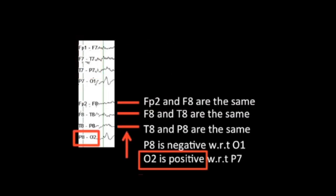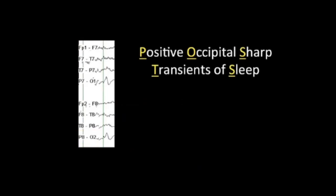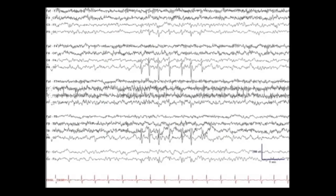If we do the same process on the other side, we see that O2 is positive as well. Therefore, we have a positive waveform in both occipital regions. This is actually a normal waveform that we'll talk about further in additional videos, called a positive occipital sharp transient of sleep, also known as POSTS. It is important to have a good understanding of the polarity rules when we look at more complex examples,